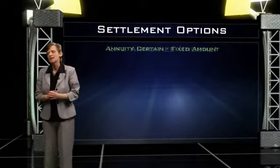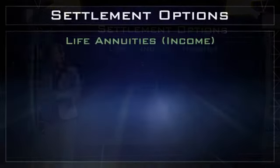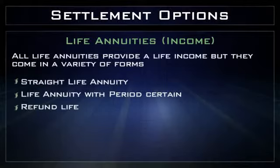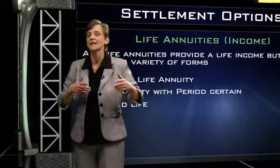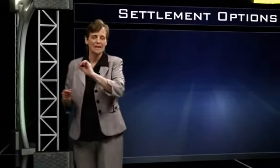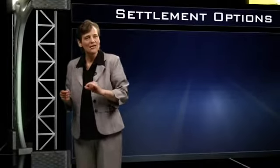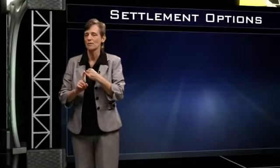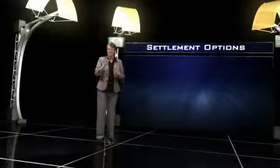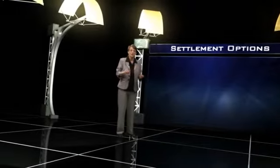The fourth settlement option is a life income. If a beneficiary or an annuitant chooses the life income, they're saying to the insurance company: take this money — I'm turning all the money in the death benefit or in the annuity over to you in exchange for your promise that you're going to pay me for as long as I live. We say that they are annuitizing. When someone annuitizes, the insurance company needs to know the person's age and gender. Based on those two factors, plus how much is in the account and an assumed interest rate, the insurance company calculates how much they're going to pay out to that annuitant every year.